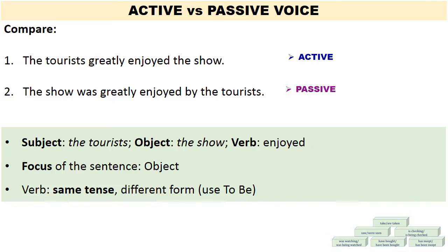Let's compare these two sentences. Sentence 1: The tourists greatly enjoyed the show. This is written in the active voice, with the subject being the tourists, the verb being 'enjoyed' in the past simple tense, and the object of the verb being the show. If we were to change this sentence into the passive form, the sentence would read: The show was greatly enjoyed by the tourists. When we use the passive voice, the subject and the object switch places.